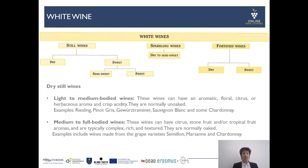There is also a category of medium to full bodied white wines. They can have citrus, stone fruit, and tropical fruit characteristics. They are usually more complex, rich, and textured — full bodied — and are typically coined by oak aging. Examples include wines made from Sémillon, Marsanne, and many Chardonnays are found in this category as well.